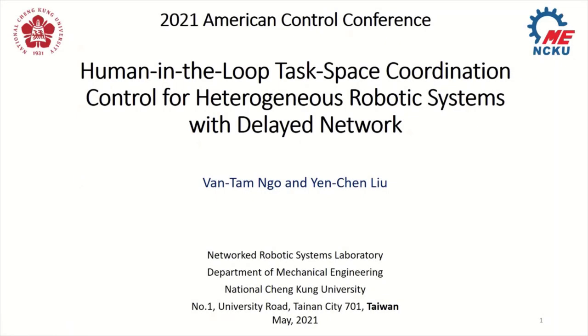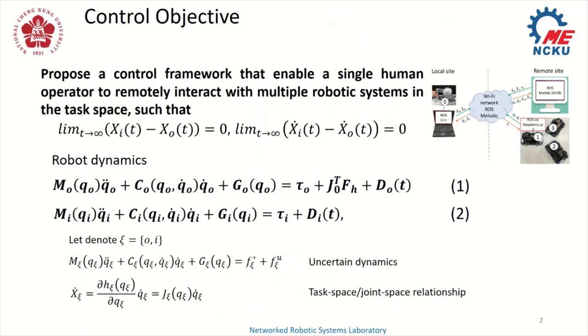Hi, everyone. I'm happy to be here today. My name is Van Tam Ngo, a PhD candidate from National Cheng Kung University, Taiwan. My advisor is Professor Yen-Chen Liu. It's clear that human is very good at handling uncertain or fuzzy problems. And multiple simple robots outperform a complicated single robot in many aspects. Thus, it is foreseeable that the collaboration of human and networked robotic systems is the key technique to enhance the flexibility and to solve tasks in remote environments. Therefore, we propose a control framework that enables a single human operator to remotely interact with multiple robot systems in the task space. Particularly, the control algorithm will ensure task space synchronization for the networked robotic system.